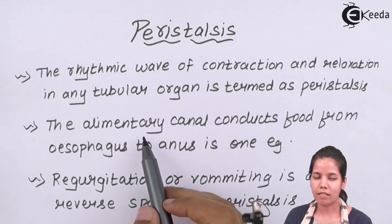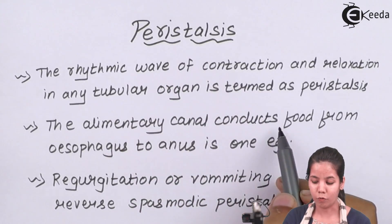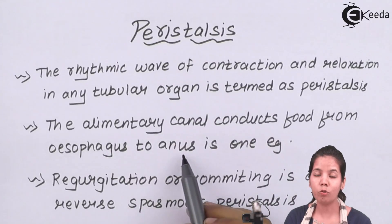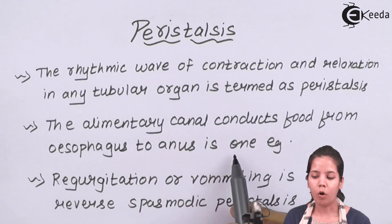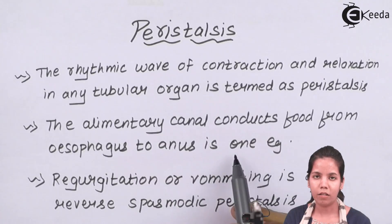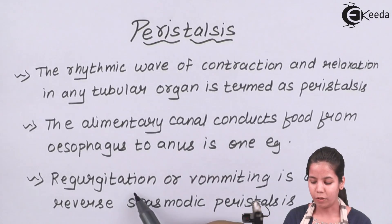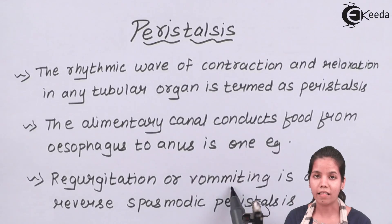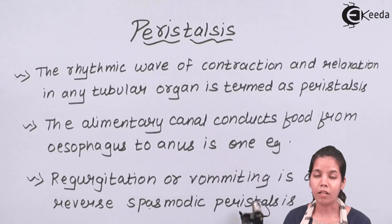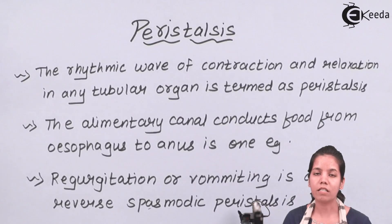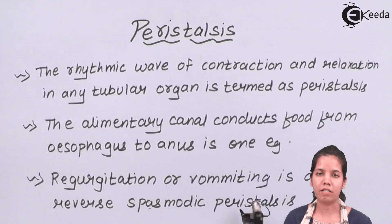An example of peristalsis could be your alimentary canal, which conducts food from the esophagus to the anus due to peristaltic movement. Also, the lining of internal organs — cilia, which are brush-like borders present inside the small intestine and large intestine — help in peristaltic movement. Another example of peristaltic movement would be the regulation of vomiting, which is nothing but reverse spasmodic peristalsis, because during this process waste materials in the form of liquid come out.